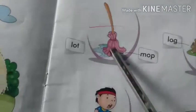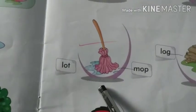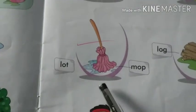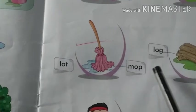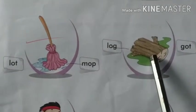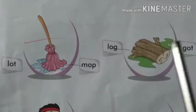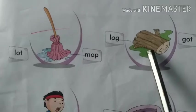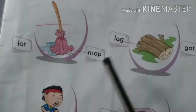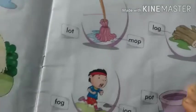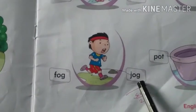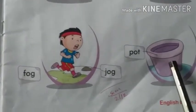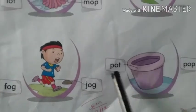Next, what can we see here? Yes — Mop. M, O, P. What is this? Log — L, O, G. Log. You match this. Next, what is he doing? Jog — J, O, G. Pot. What can we see here? Pot.